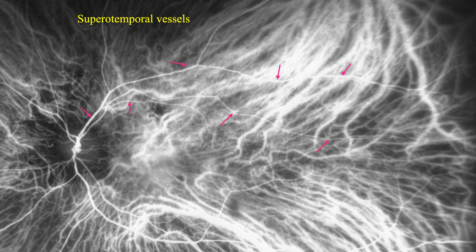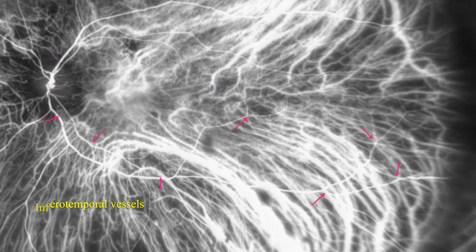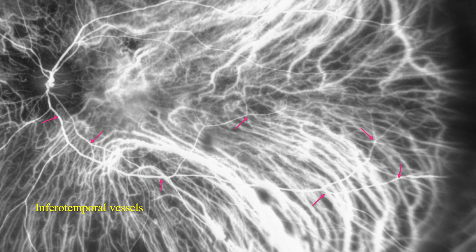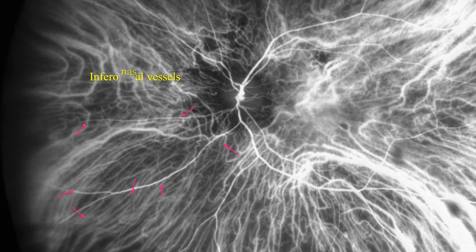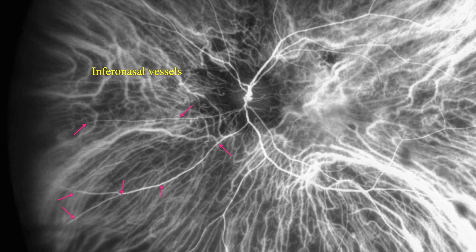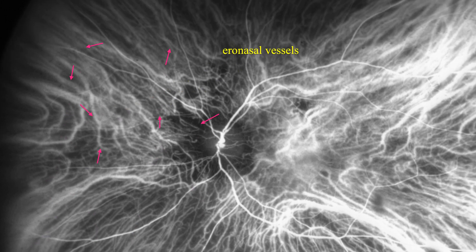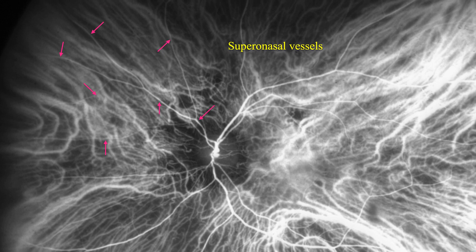Here you can see the superior temporal retinal arcade, inferior temporal retinal vessels, inferior nasal retinal vessels, and finally the superior nasal retinal arcade.